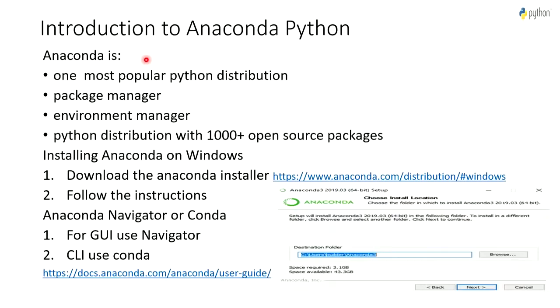How do you install Anaconda on Windows? For installing Anaconda, you first need to download the installer, which is available at the Anaconda website link. You can install it depending on your operating system — Windows, Linux, or Mac. Select the appropriate installer from that link and follow the instructions thereafter.